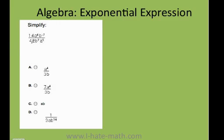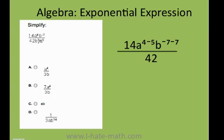The first thing we're going to do is work with the letters and then we'll simplify the numbers. Go ahead and bring all the letters to one side. Since we're dividing, we will subtract. So this a to the 4th is on the top, but when I bring this 5 to the top it's going to be 4 minus 5. This 7 goes to the top and this is negative 7 minus 7. Be very careful — people have the tendency of eliminating these two. Remember, when you have exponents as a fraction, you need to subtract.